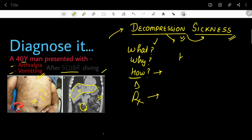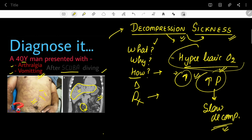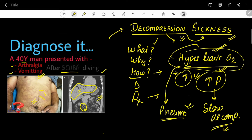The best treatment for decompression sickness is hyperbaric oxygen therapy. If a hyperbaric oxygen chamber is not available, recompression followed by slow decompression can also be attempted. Contraindications to hyperbaric oxygen therapy include pneumothorax — because hyperbaric oxygen can cause the pneumothorax to expand further, compressing the lungs and causing serious consequences — and barotrauma to the ear, which is also a contraindication.